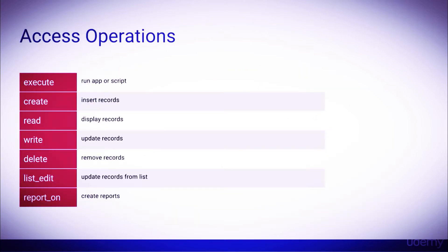The main access operations are the following: Execute, which grants access to run an app or script; Create, which grants access to insert records in a table; Read, which grants access to view records; Write, which grants access to update records; Delete, which grants access to delete records; ListEdit, which grants access to update records from a list view; and ReportOn, which grants access to create reports on a specific table.